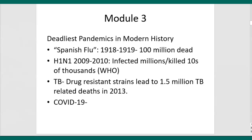Some of the deadliest pandemics in modern history include the Spanish flu of 1918 to 1919, where an estimated 100 million died across the globe. More recently, H1N1 in 2009–2010 infected millions and killed tens of thousands, according to the World Health Organization. In 2013, drug-resistant strains of TB were blamed for the deaths of as many as one and a half million people. And then, of course, we have COVID-19, which is with us now and the picture continues to develop.